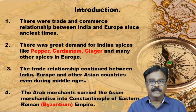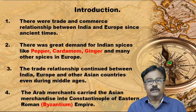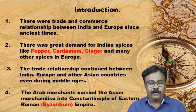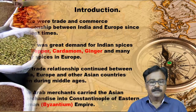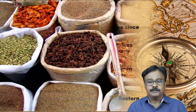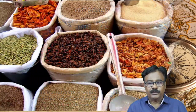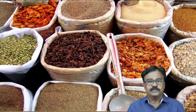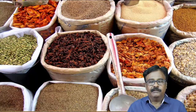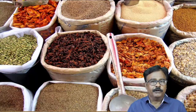The Arab merchants carried the Asian merchandise into Constantinople of the Eastern Roman Byzantine Empire. Spices were the main goods for European trade, and Europeans used to come to India specifically to trade in them.